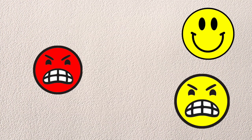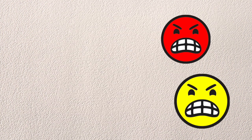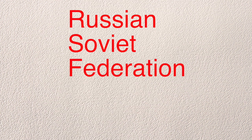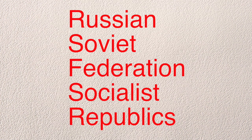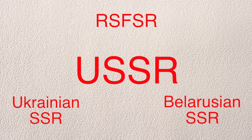So the red-loving Tsar haters won the revolution slash civil war and formed the Russian Soviet Federation of Socialist Republics, or the Russfser. Then the Russfser went to the Ukrainian SSR and the Belarusian SSR, and together they formed the USSR.